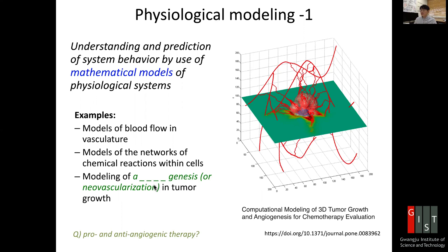Another example is modeling of angiogenesis, also called neo-vascularization, in tumor growth. 'Angio' means blood and 'genesis' means new formation. Angiogenesis occurs when cancer tumors grow and require oxygen and nutrient supply, so they secrete factors which grow blood vessels from existing vessels.